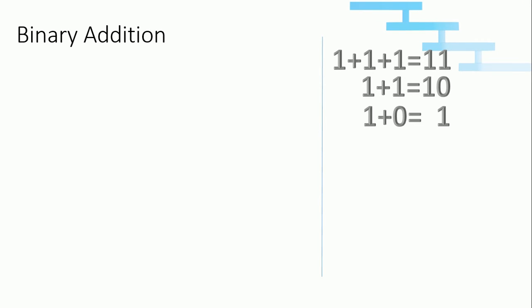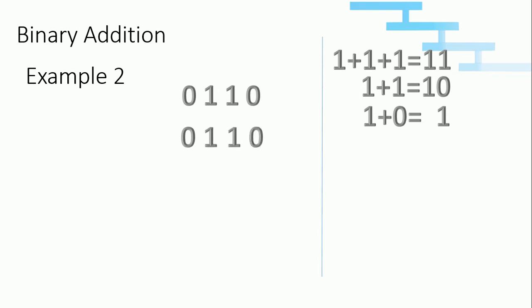Now we will see example two. The difference here is when we add one, one, and one in binary we get one one, because one plus one plus one in decimal gives us three, and the binary representation of three is one one.